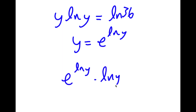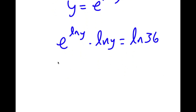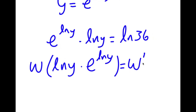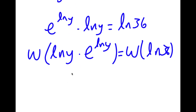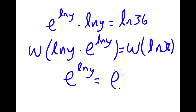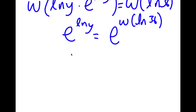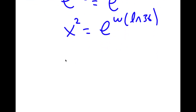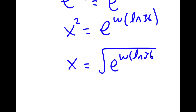So now I have e to the power of ln y times ln y is equal to ln 36. Now I'm going to take the Lambert W function on both sides. So I have W of ln y times e to the power of ln y is equal to W of ln 36. This results in e to the power of ln y equaling e to the power of W of ln 36. And remember how we let y equal to x squared, so now I have x squared is equal to e to the power of W of ln 36. If I take the square root on both sides, I get x is equal to plus or minus the square root of e to the power of W of ln 36.